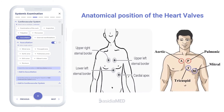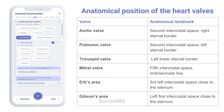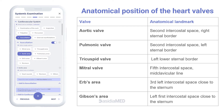The anatomical position of heart valves relative to the chest wall will dictate the optimal position for auscultation. The valves are best located as follows: Aortic valve at the second intercostal space, right sternal border. Pulmonic valve at the second intercostal space, left sternal border. Tricuspid valve at the left lower sternal border.